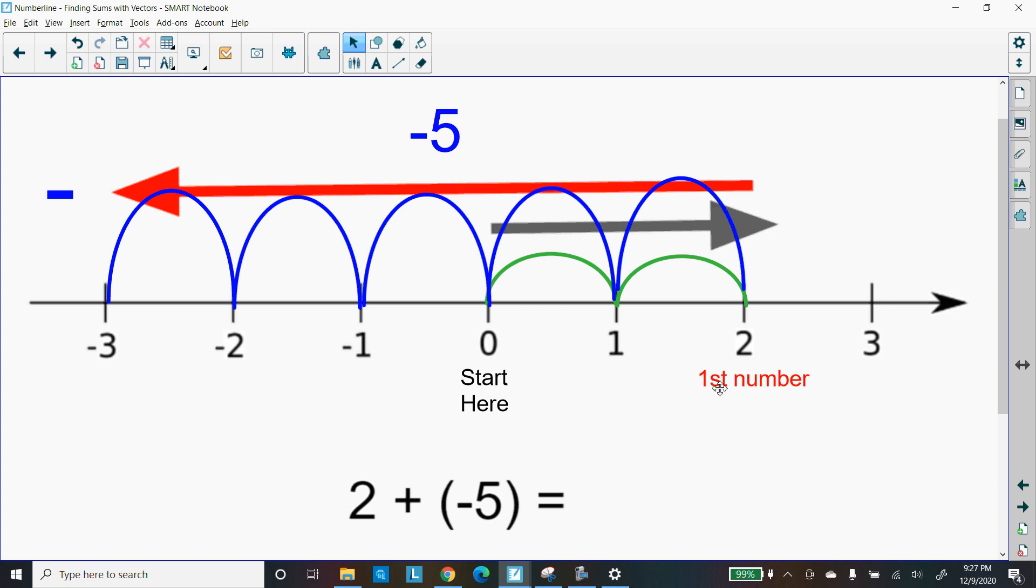So we started, our first number was the 2. Our second number we had to count, and that gave us the negative 5. Now all we have to do is find out what it equals to. Well, what's nice about the second vector, when you look at the last ending where it stopped at, it stopped at a negative 3 there. And that negative 3 is going to be our answer.